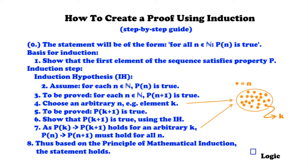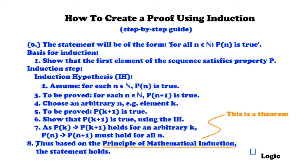In step 7, we conclude that since P(k+1) is true and the implication P(k) implies P(k+1) holds for an arbitrary k, the implication P(n) implies P(n+1) must hold for all n. Then in step 8, the conclusion states: thus, based on the principle of mathematical induction, the statement holds. This principle is a theorem, so we must refer to it when concluding the proof. Now let's apply the guide to the prepared exercises.